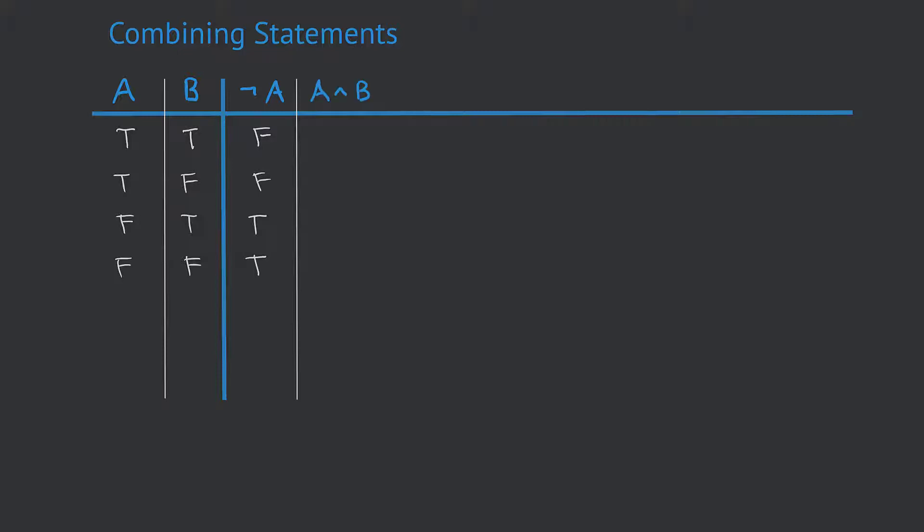The statement A and B is true if and only if both A and B are true. The only one of these four lines where both A and B are true is the first one, so here the value for A and B is true. For all other lines or combinations, at least one of A or B is false, which is why A and B is false for the three remaining lines.